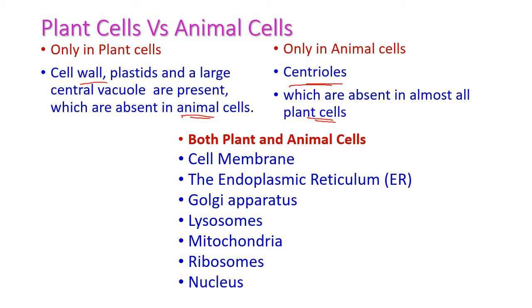Now, the following cell organelles are present in both plant and animal cells. They are: cell membrane, endoplasmic reticulum, Golgi apparatus, lysosomes, mitochondria, ribosomes, and nucleus.